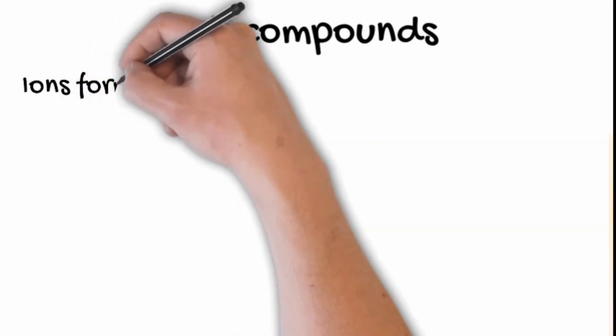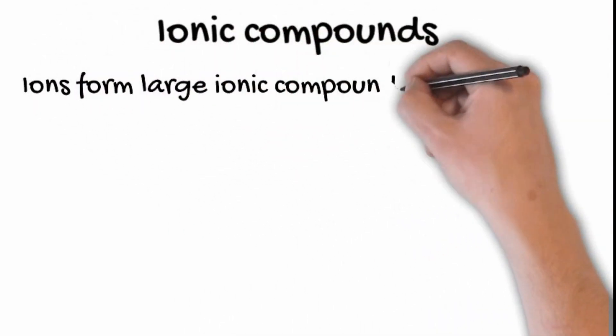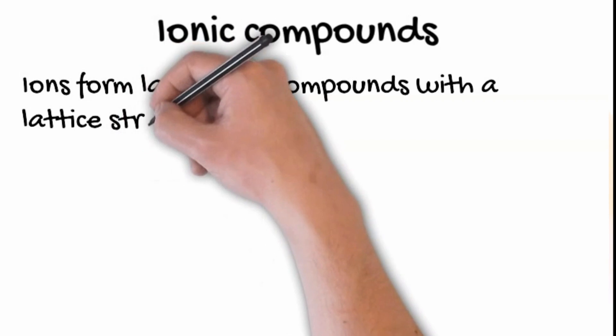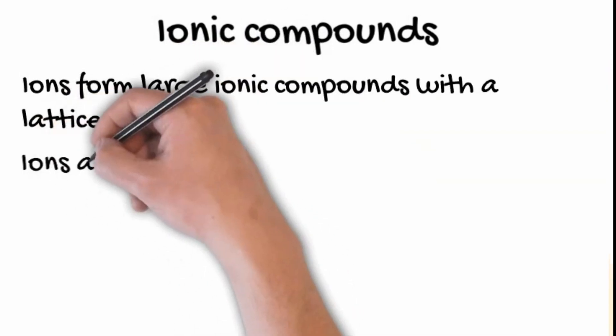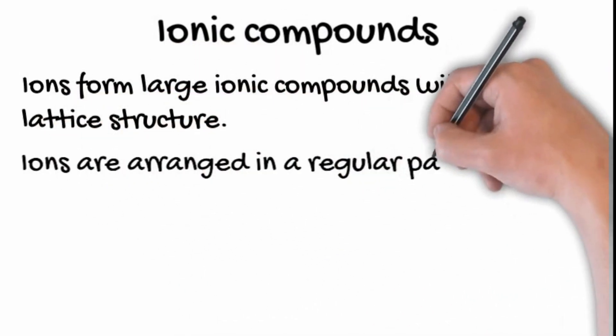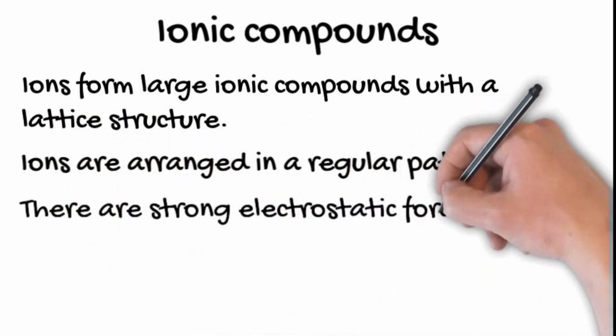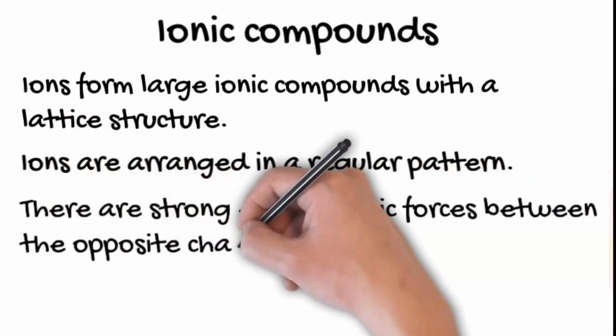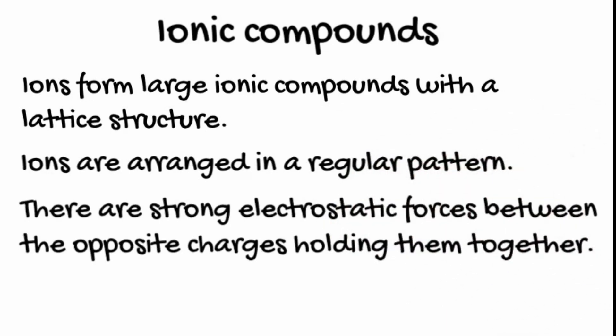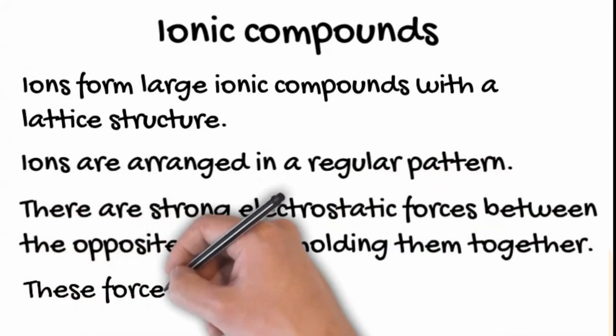These ions form large ionic compounds with a lattice structure. Ions are arranged in a regular pattern. There are strong electrostatic forces between opposite charges that hold them together, and these forces are the ionic bonds.